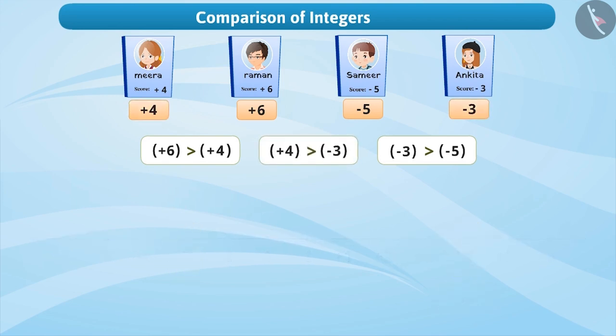So, we can arrange the given numbers in descending order in this way and ascending order in the opposite way. We can safely conclude that Raman got the highest score whereas Samir got the lowest score.